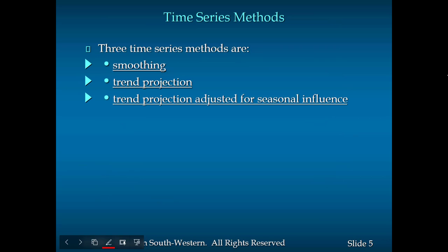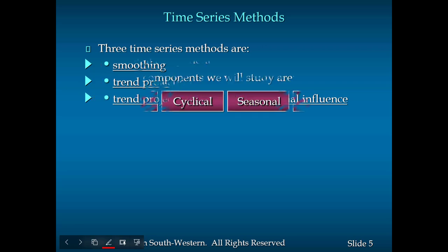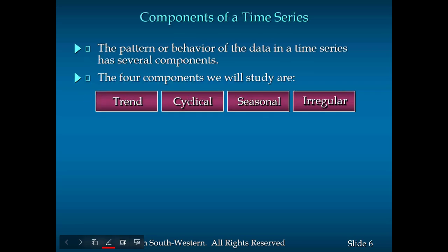There are three different methods we are using: the smoothing method, trend projection, and trend projection adjusted to the seasonal component. There are also four basic elements in time-series analysis.